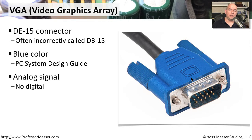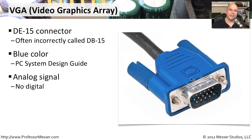A VGA connection outputs an analog video signal. You may notice this if you try to extend a VGA signal over a long distance — you may see ghosting or information not looking quite right on the other side because of signal loss. Unlike a digital connection where you either get the signal or you don't, with an analog connection you simply get a degraded display that does not look as crisp as it should.